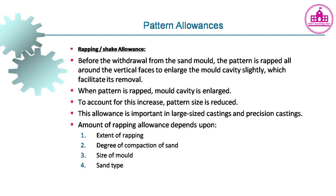Wrapping or shake allowance: Before withdrawal from the sand mold, the pattern is rapped all around the vertical faces to enlarge the mold cavity slightly, which facilitates its removal. When the pattern is rapped, the mold cavity is enlarged; to account for this increase, the pattern size is reduced. This allowance is important for large-sized and precision castings. The amount depends on: extent of wrapping, degree of compaction of sand, size of mold, and sand type.